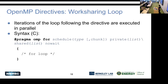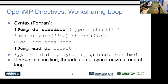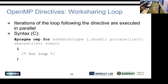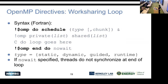The most commonly used directive is the work-sharing loop — in C/C++ it's `#pragma omp for`, and in Fortran it's `!$omp do` with a corresponding `!$omp end do`. The loop distributes iterations across threads. An optional `nowait` clause — added before the closing brace in C or at the end of `end do` in Fortran — allows threads that finish sooner to proceed to the next command without waiting for all threads to complete.